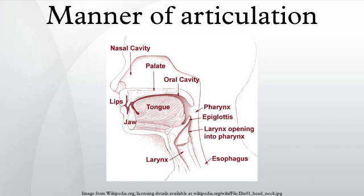Nasal: a nasal occlusive where there is occlusion of the oral tract, but air passes through the nose. The shape and position of the tongue determine the resonant cavity that gives different nasals their characteristic sounds. Examples include English /m, n/. Nearly all languages have nasals, the only exceptions being in the area of Puget Sound and a single language on Bougainville Island.